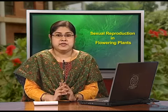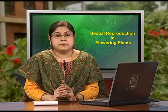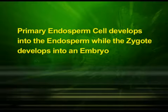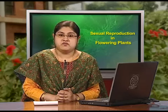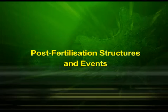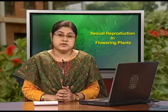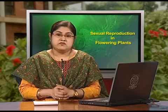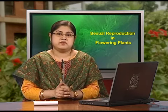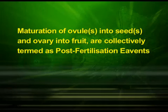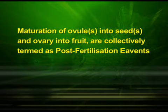The central cell after triple fusion becomes the primary endosperm cell and develops into the endosperm, while the zygote develops into an embryo. After double fertilization, events of endosperm and embryo development, maturation of ovules into seeds and ovary into fruit are collectively termed as post-fertilization events.